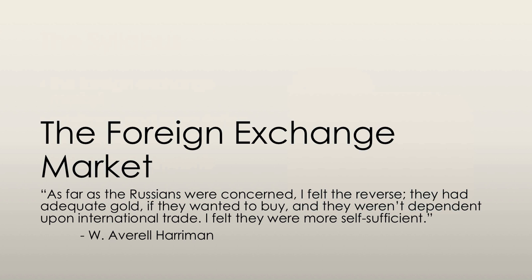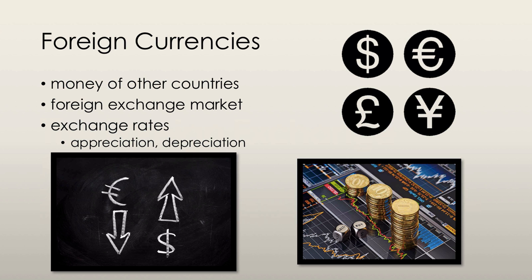Let's begin by taking a look at the foreign exchange market. A foreign currency is the money of another country, regardless of whether that money is in the form of notes, coins, or bank deposits. The currency of one country is exchanged for the currency of another in what is known as the foreign exchange market. This market is made up of importers, exporters, investors, speculators, travelers, etc. An exchange rate is a price at which one country exchanges its currency for another currency in the foreign exchange market.